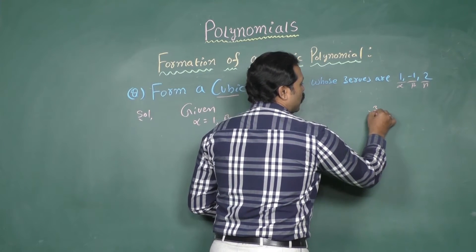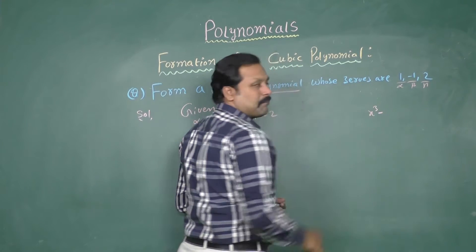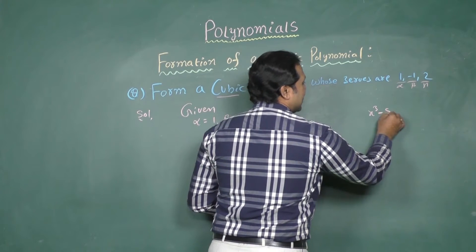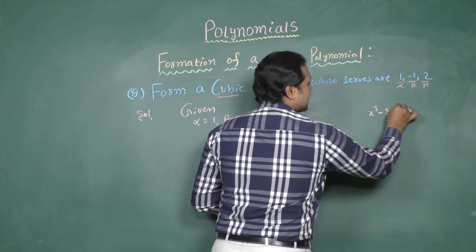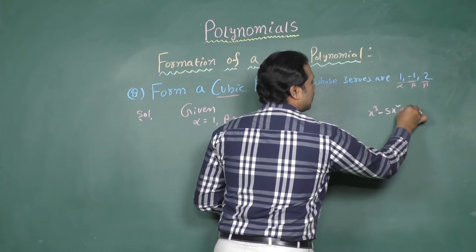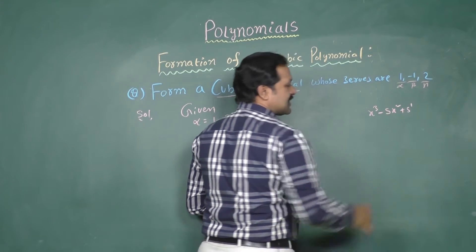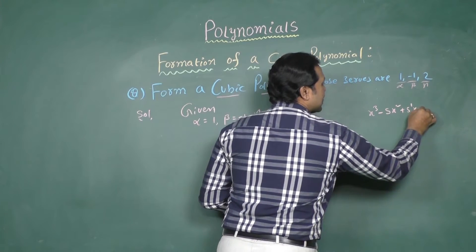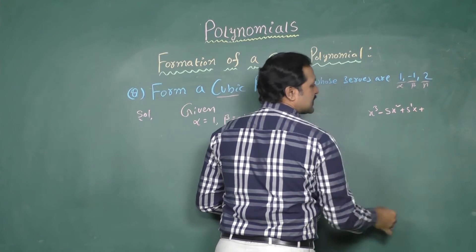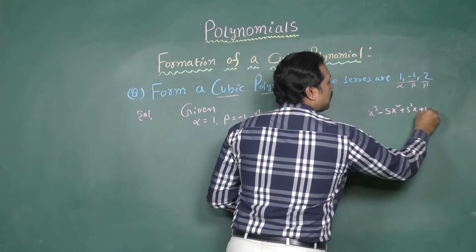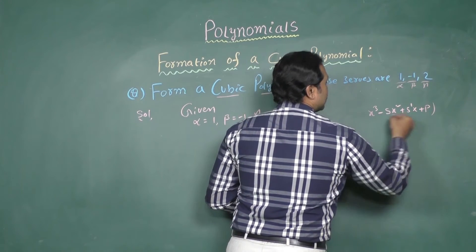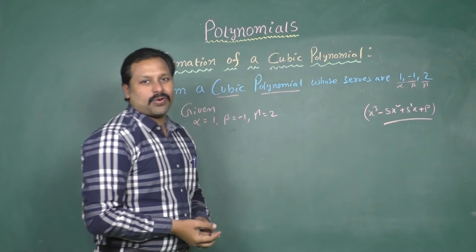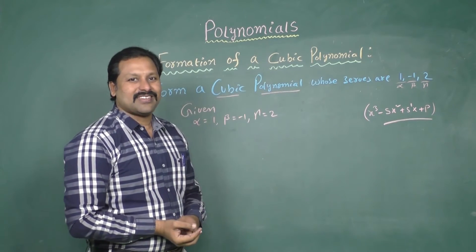According to the question, the cubic polynomial is x cube minus S x square plus S-dash x plus p. This is our required cubic polynomial.